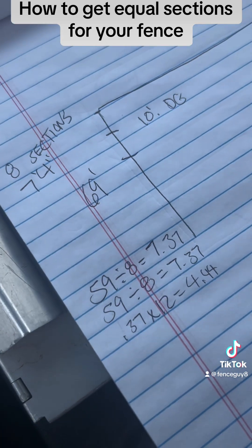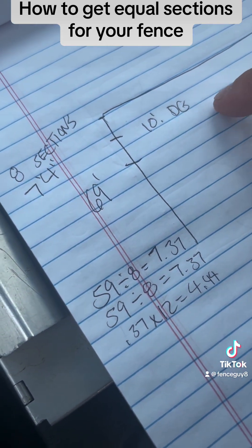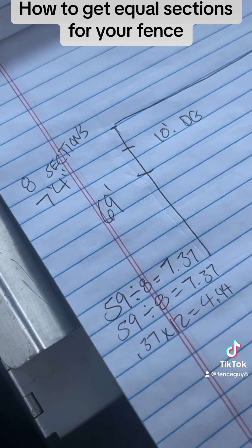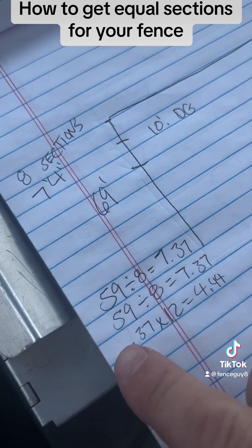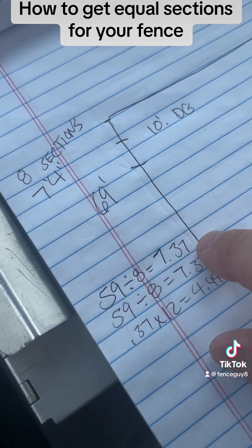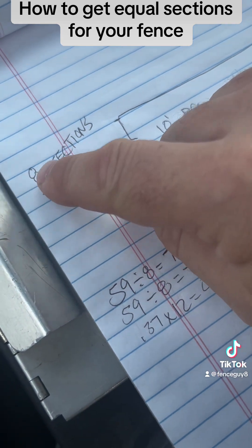Alright, this side here has a double gate, 10 foot. So all you're going to do is you're going to take 69, you're going to take the 10 feet out of it, and you're going to do the same thing. 59 divided by 8, you're going to get 7.37. We're going to round that up to 8 sections.